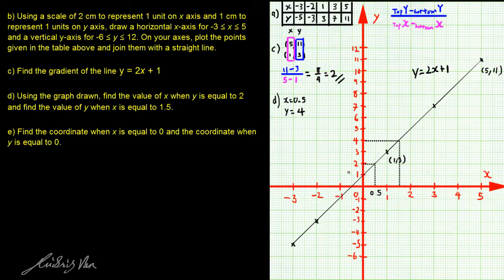Very simple, when x is equal to 0, it is here. So the coordinate is basically the point where the straight line cuts the y-axis, or we call this point the y-intercept, which is 0, 1.